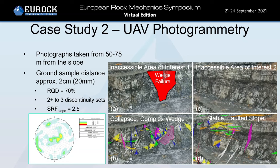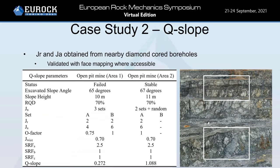UAV photographs were taken from a distance of 50 to 75 meters away from the slope, resulting in a ground sample distance of 20 millimeters in the model. The model was used to estimate RQD, which averaged at 70% across both areas. The main geological features were mapped and are shown as disks in the photographs and in the stereographic projection, and were used to estimate the orientation factor in Q-slope. JR and JA were obtained from nearby diamond core boreholes and validated with face mapping where accessible lower in the slope. Q-slope values of 0.27 and 1.0 were attained for the failed and stable areas respectively.